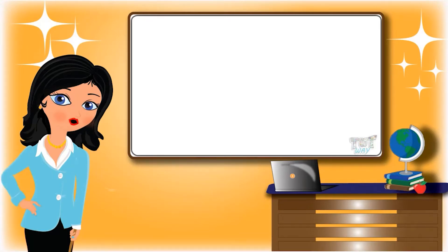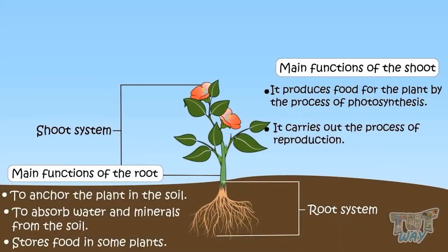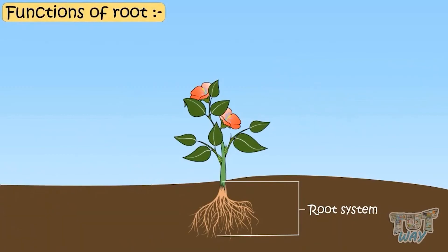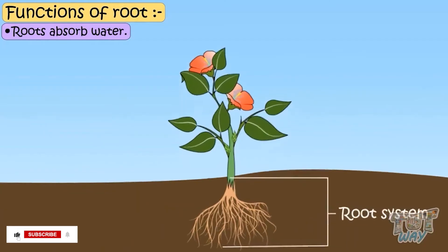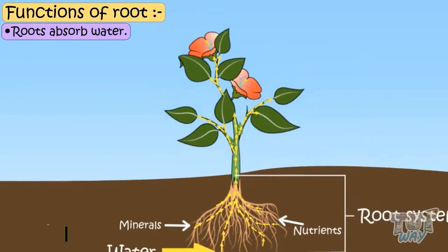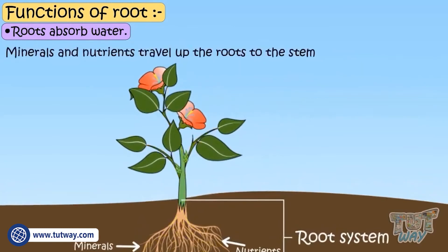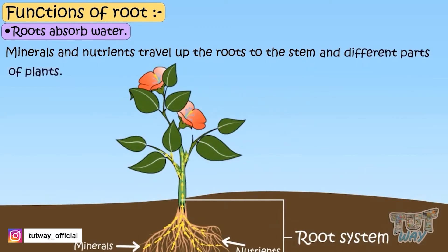Today we will learn about the functions of roots. Roots absorb water from the soil, which provides plants with nutrients and minerals. Just as we need food and water to live, plants need these minerals and nutrients to grow strong and healthy. These minerals and nutrients travel up the roots to the stem and different parts of the plant to provide nutrition to all parts.